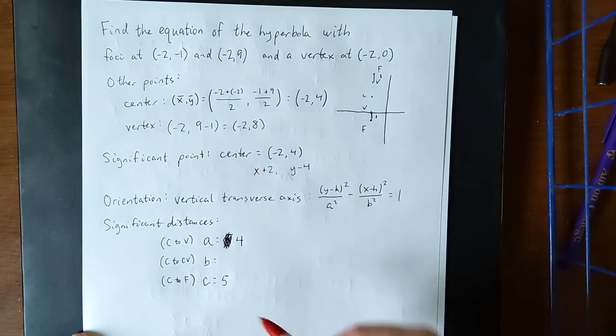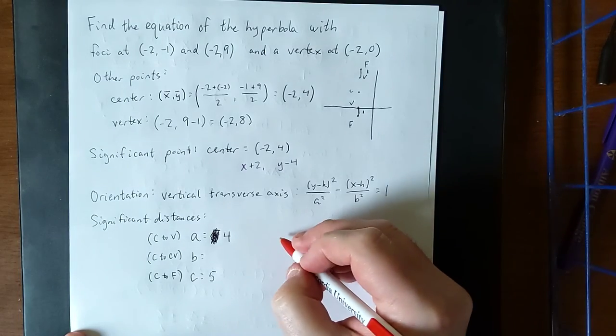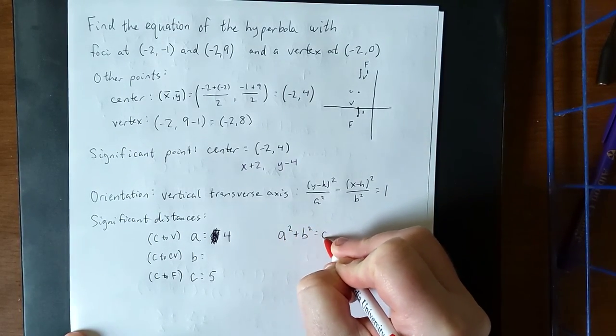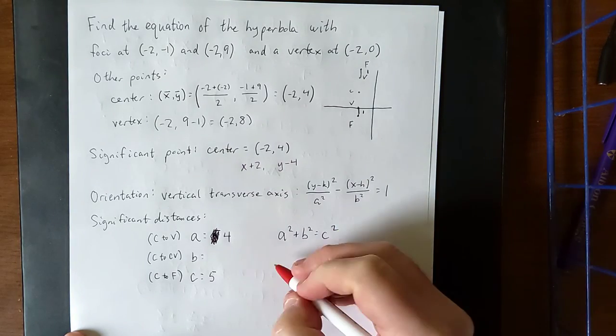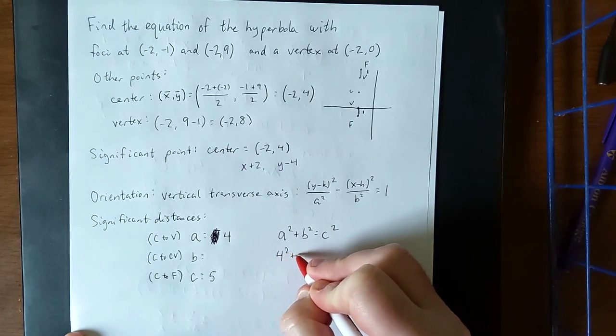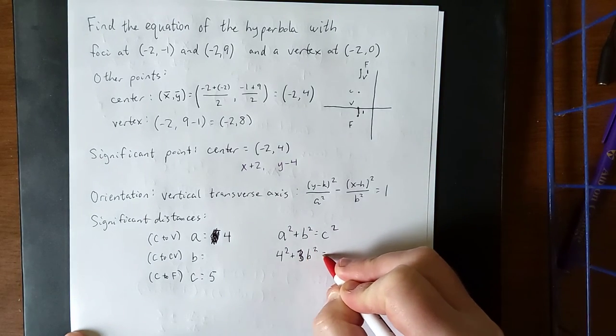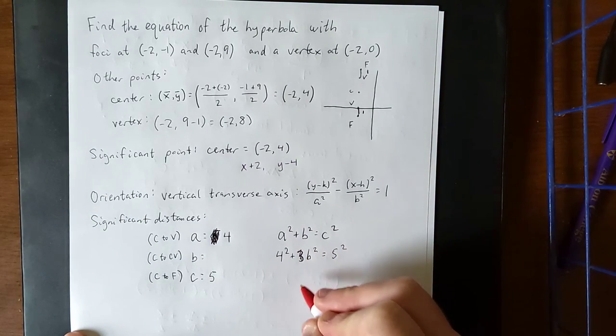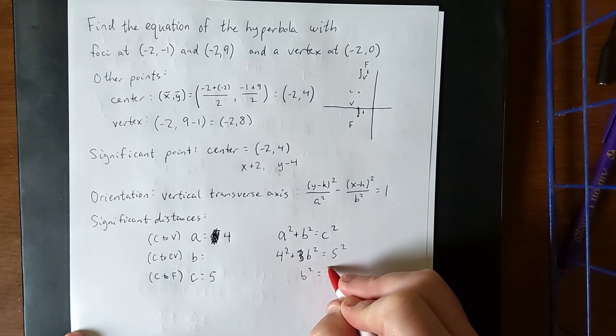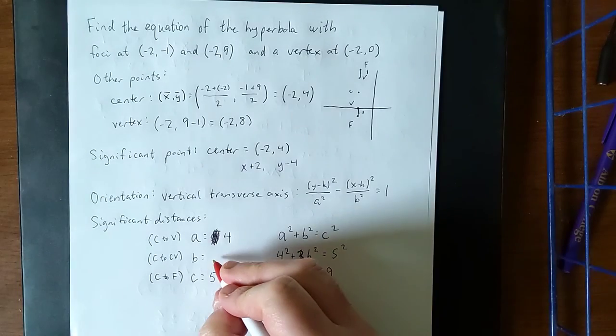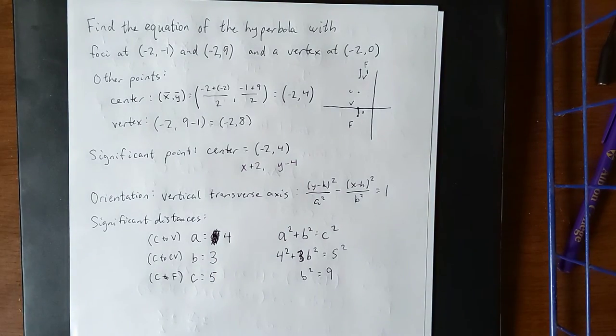Once we have two of these values, we'll be able to get the other value by making use of the Pythagorean theorem. That'll be a² + b² = c², as it is for hyperbolas. That'll be 4² plus... spoiler alert, that's about to be 3². Well, might as well let the cat out of the bag now. 25 - 16 will give us 9, as we're solving for b², and that lets us know that b is going to be equal to 3.